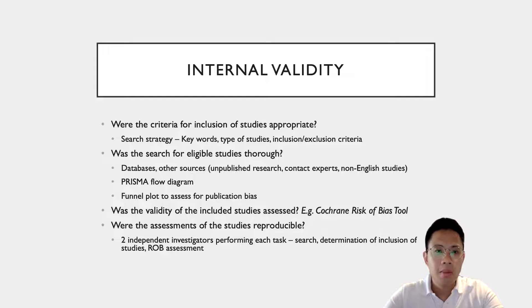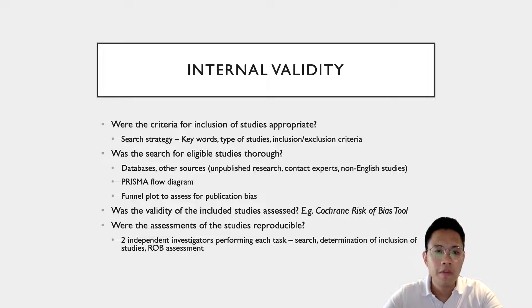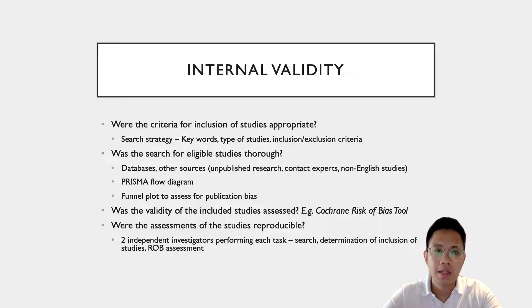Let's spend some time talking about the internal validity of assessing a systematic review and meta-analysis — basically, how robust is the methodology of the study. First, we look at the criteria for inclusion of the studies and whether this is appropriate. We look at the search strategy: what were the keywords that were used, what were the types of studies that were included, and what were the inclusion and exclusion criteria?